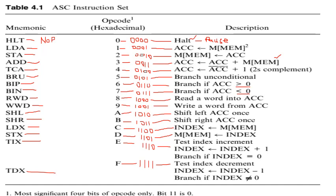The next instruction is the STA instruction. STA has opcode 2, equivalent to 0010 in binary. STA is the opposite of LDA. In LDA, data moves from memory to the accumulator. In STA, data moves from the accumulator to the memory location.